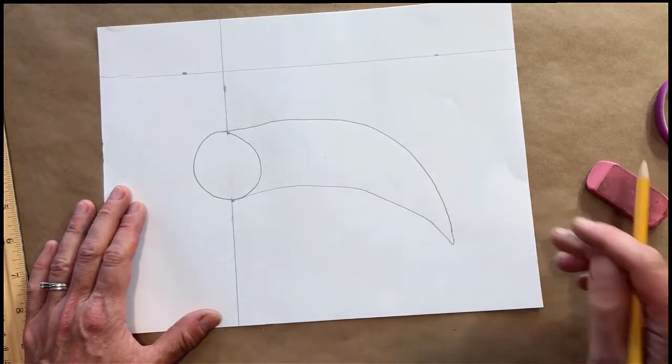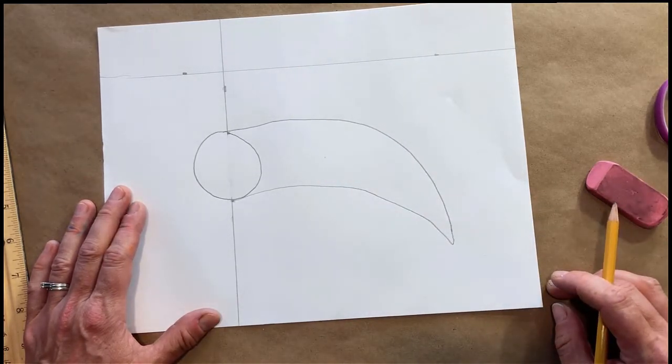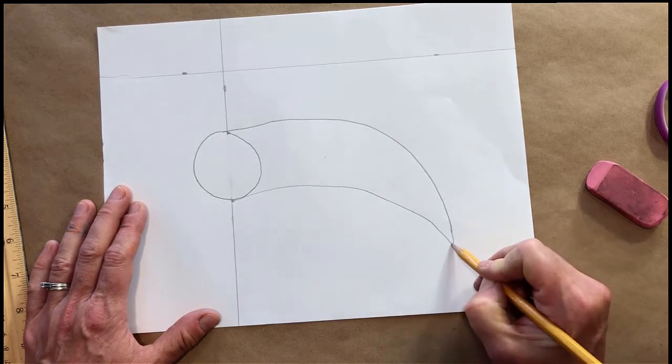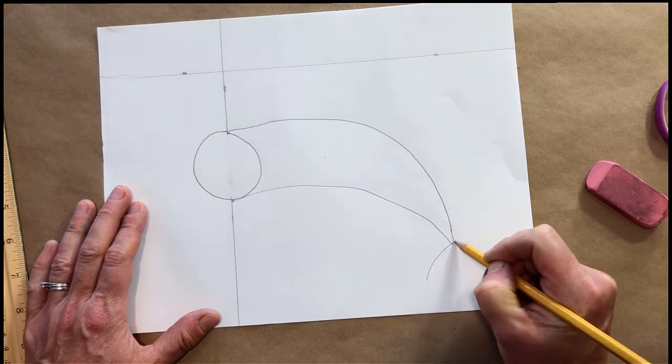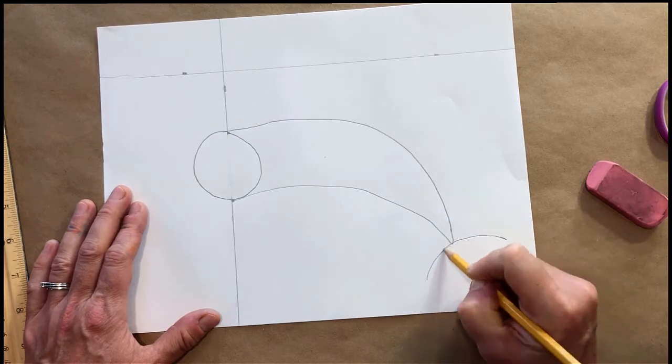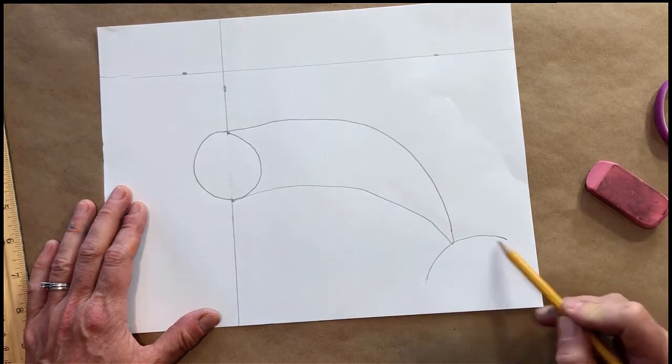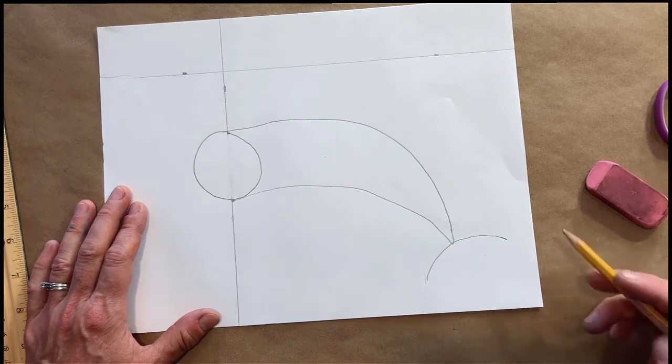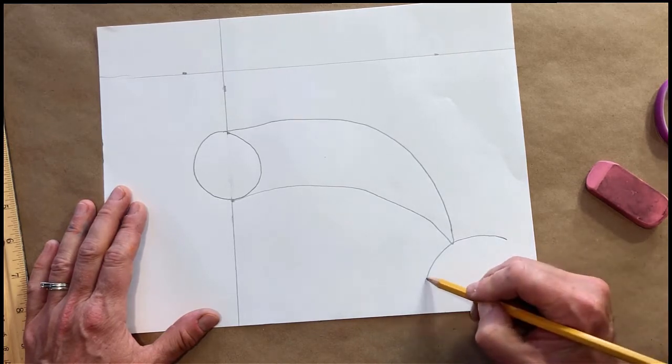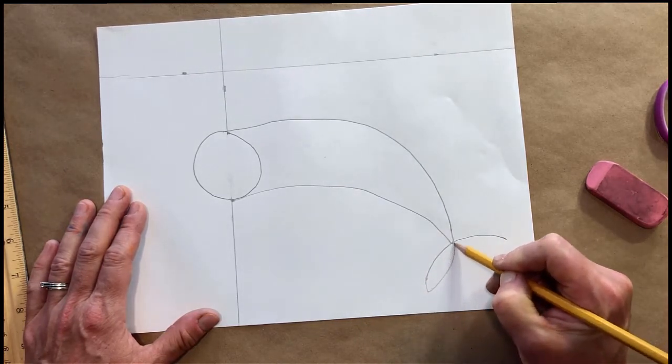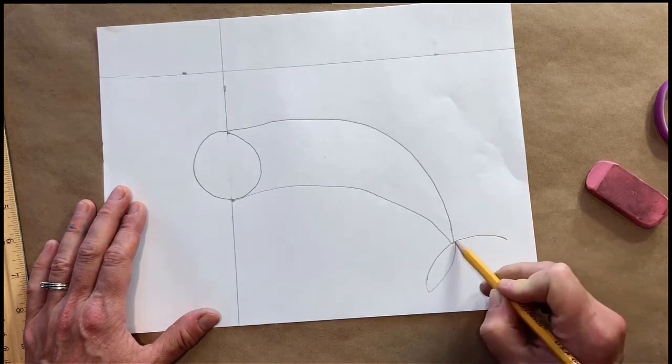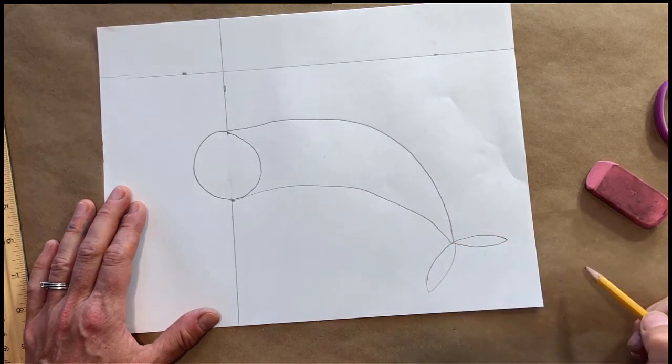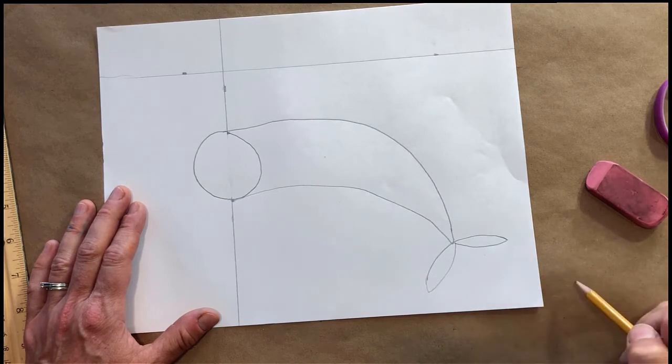After you get that banana shape, then we're going to do the next step. We're going to do almost like a curved line coming off that end of that banana shape right there. We're going to bring that in, almost like a leaf shape, and do another leaf shape on that side. So now you have the flippers.